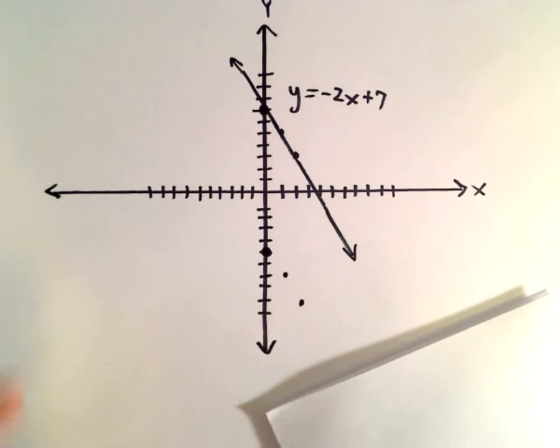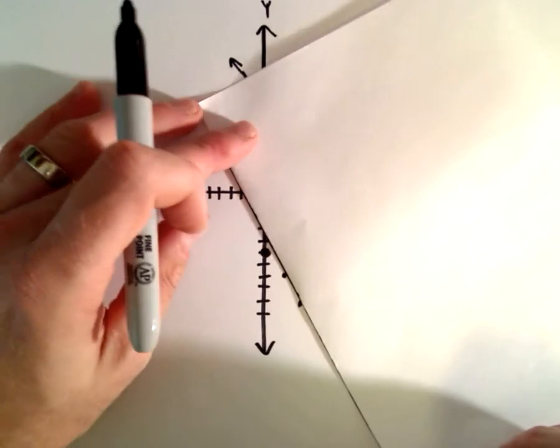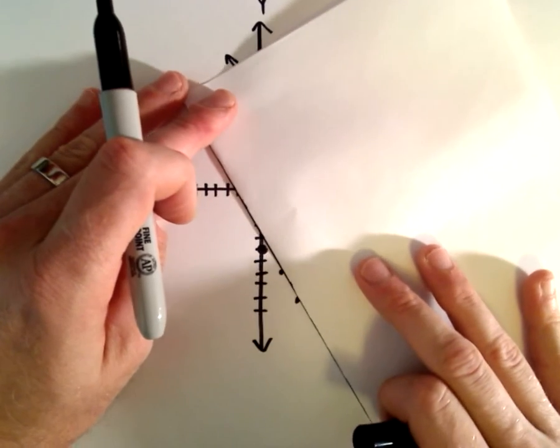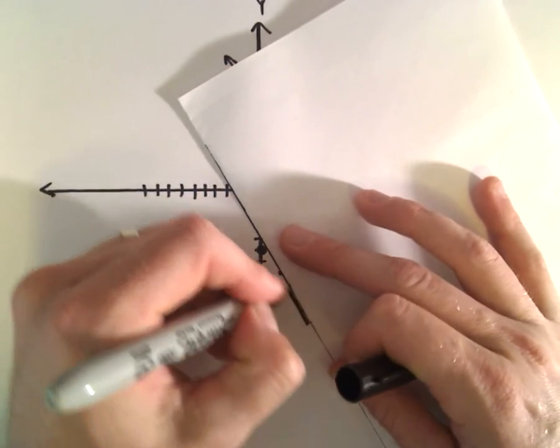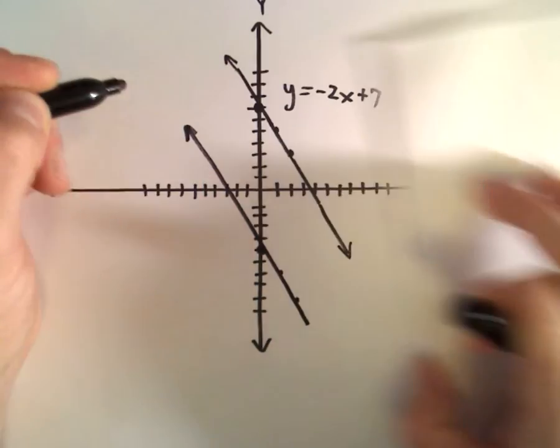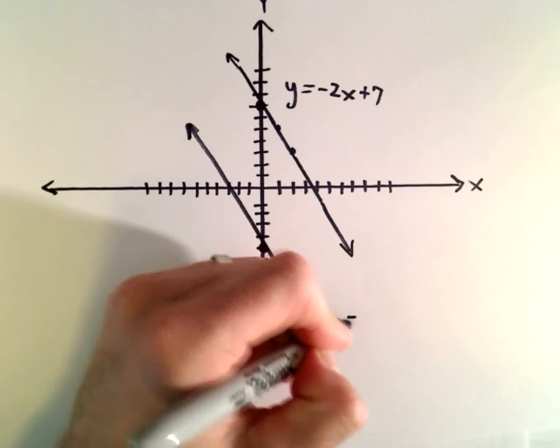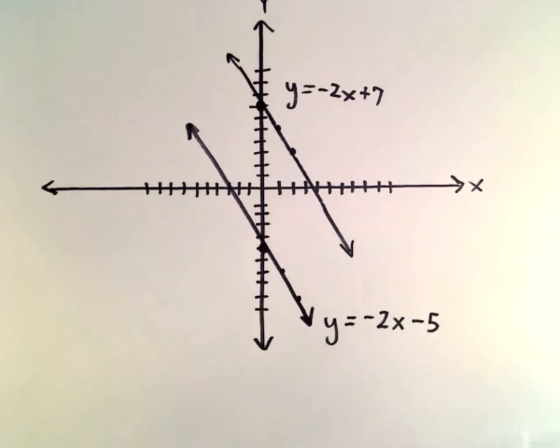These should be parallel lines. Hopefully they'll look relatively parallel. I think pretty close, looks good to me. There's our other line, y equals negative 2x minus 5.